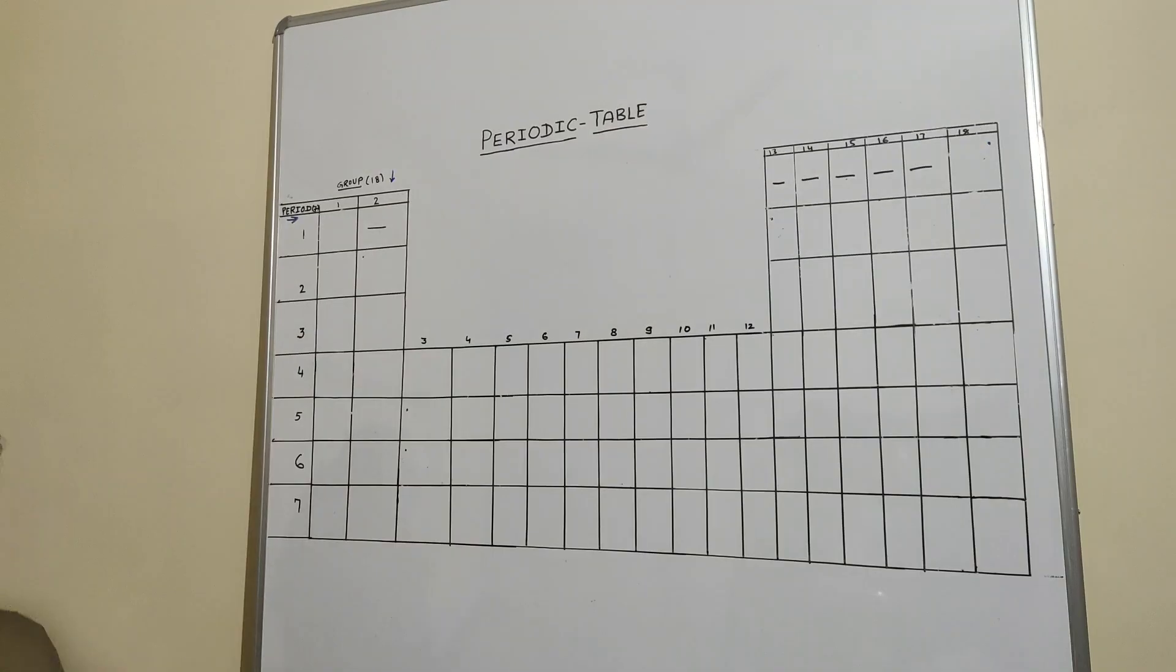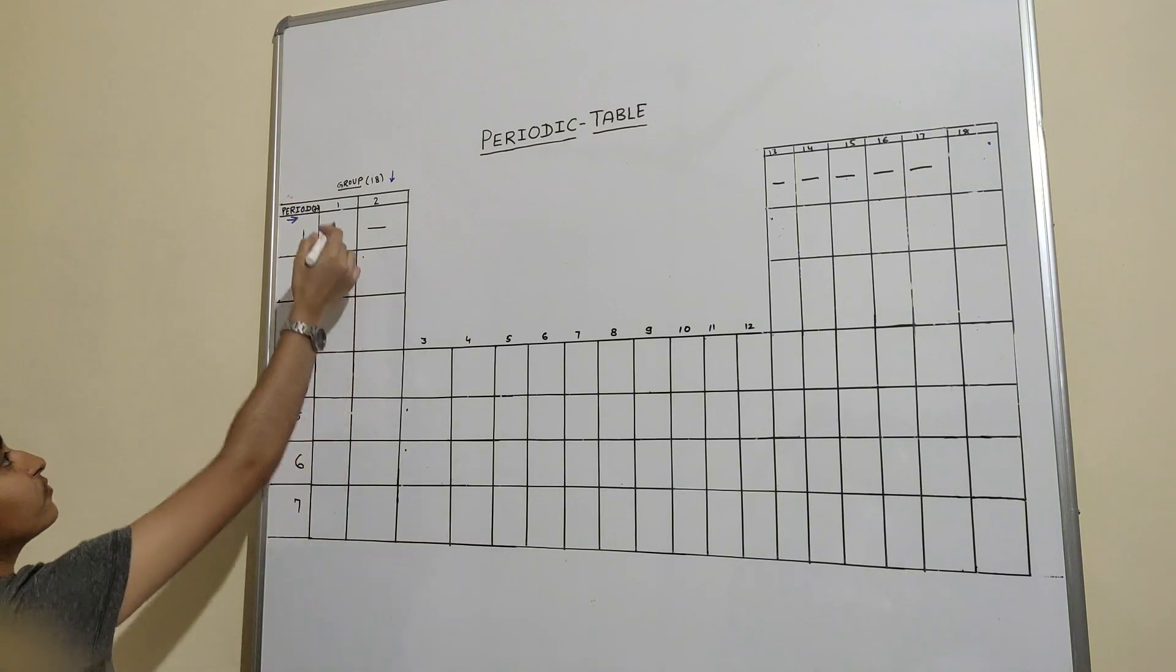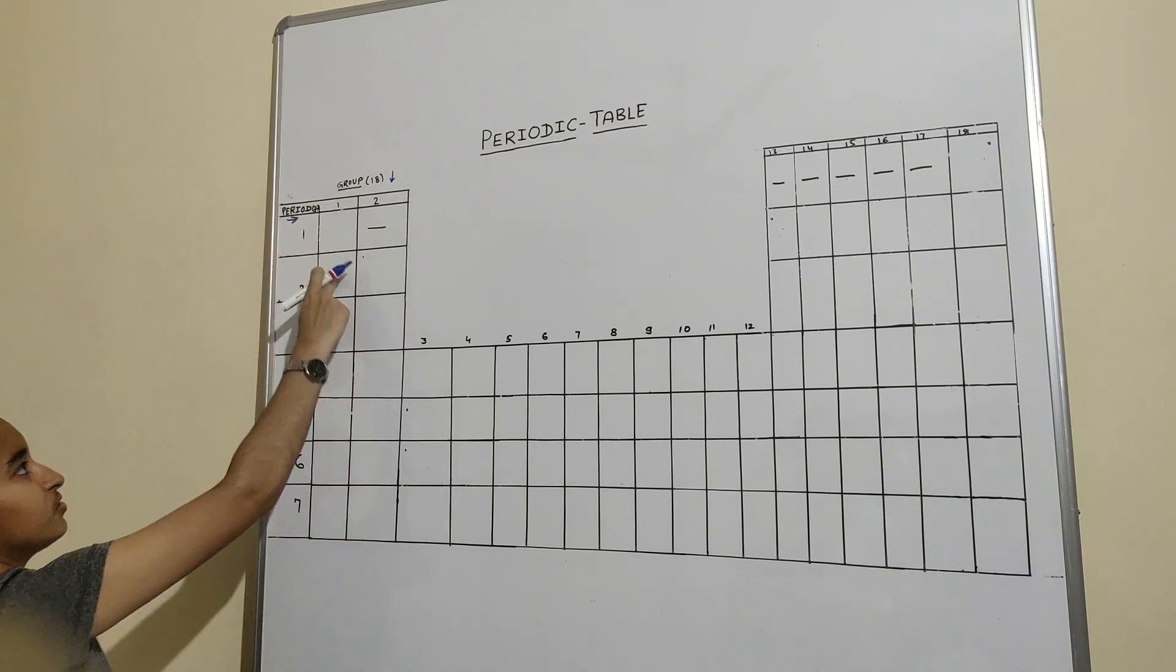This is basically divided into seven periods: 1st, 2nd, 3rd, 4th, 5th, 6th, 7th. These are from left to right, and there are 18 groups in the periodic table from up to down, like 1, 2, 3, like this in the sequence.